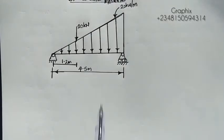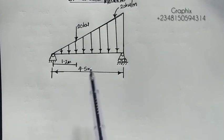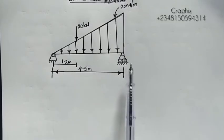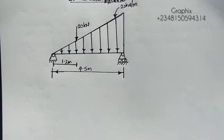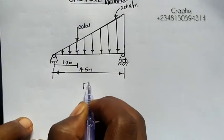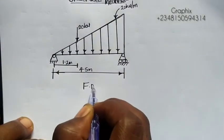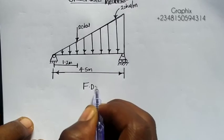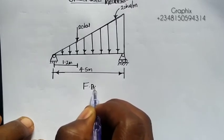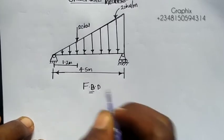First of all, you have to draw this in a free body diagram. This beam has two supports: we have the hinge support and we have the roller support. So in drawing this in our free body diagram, we are going to be having this.